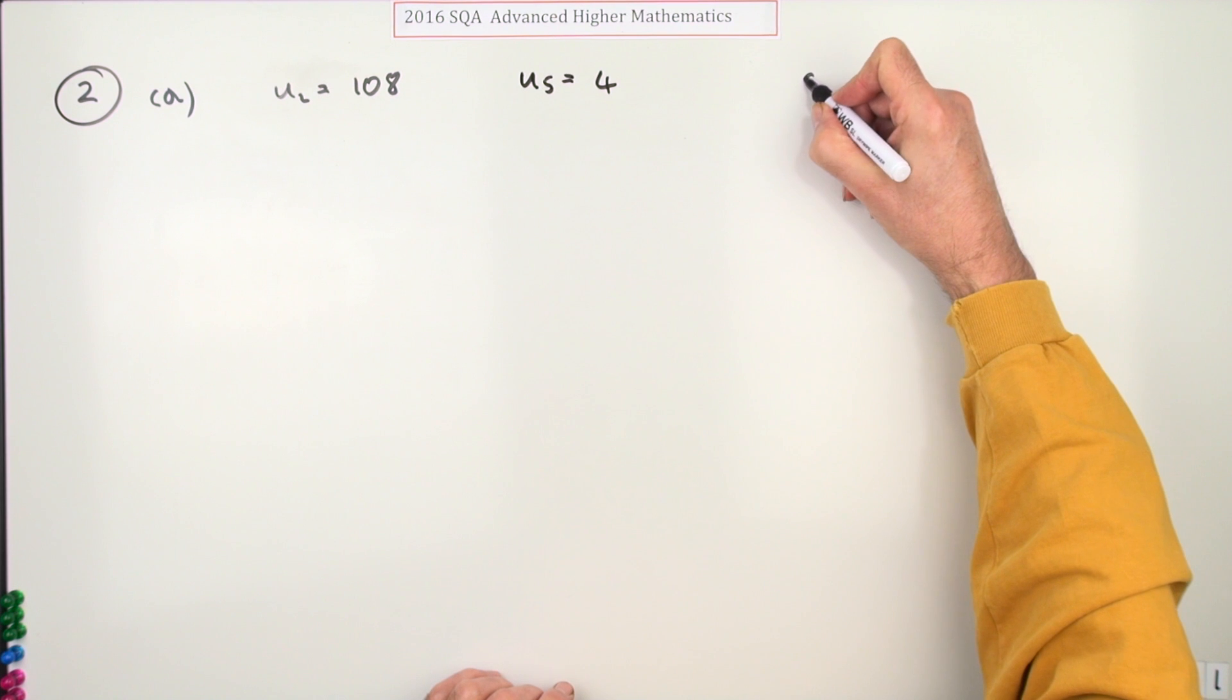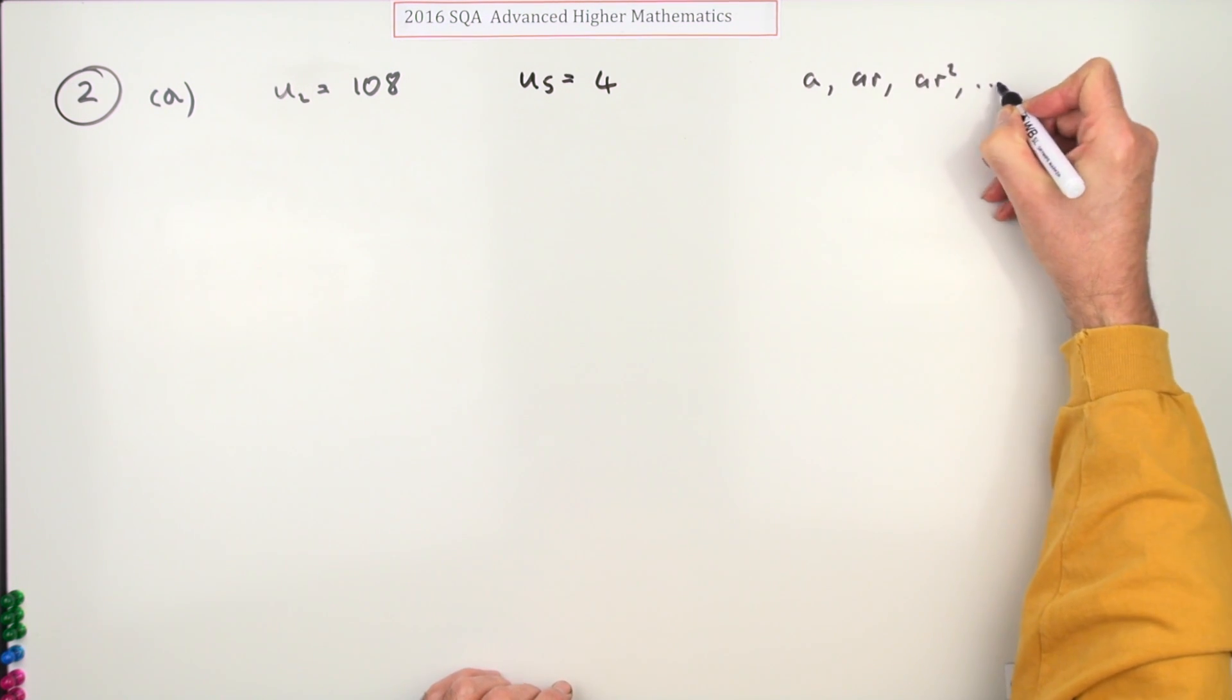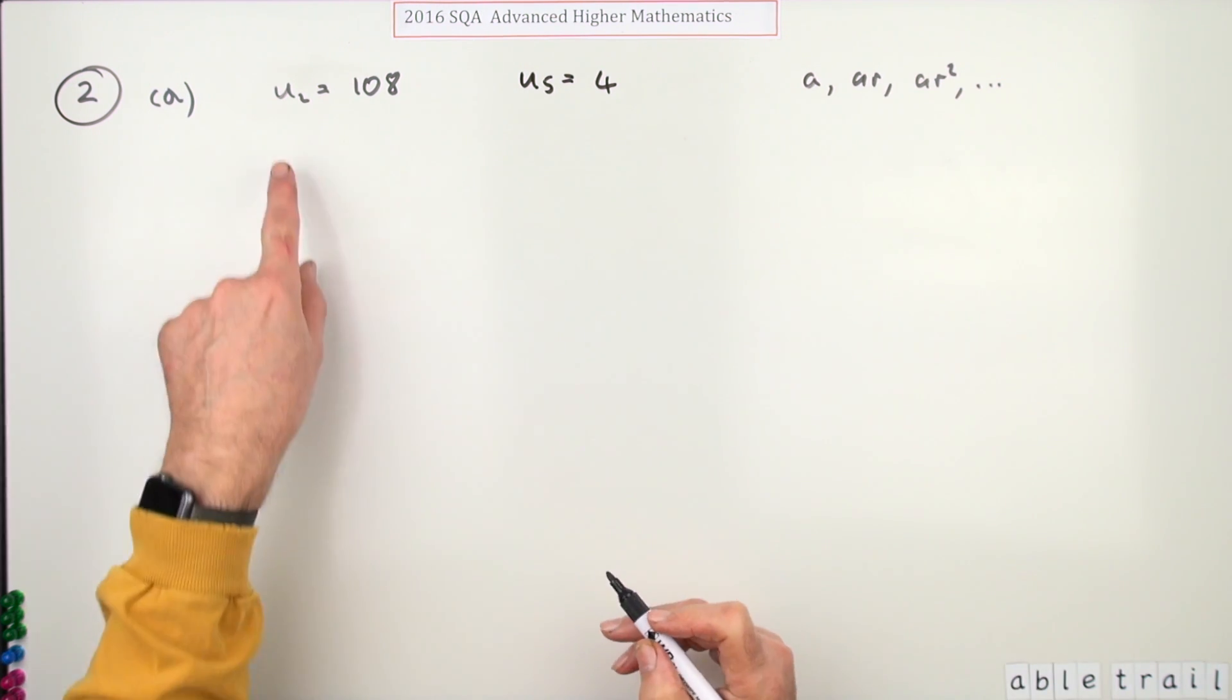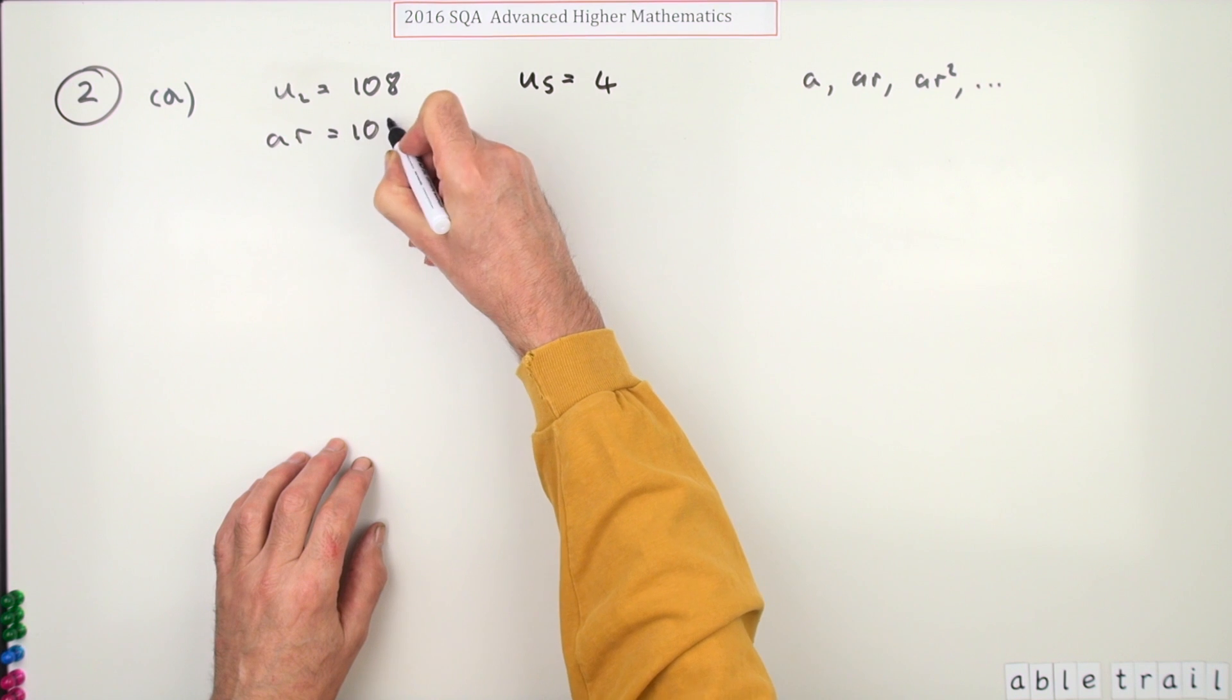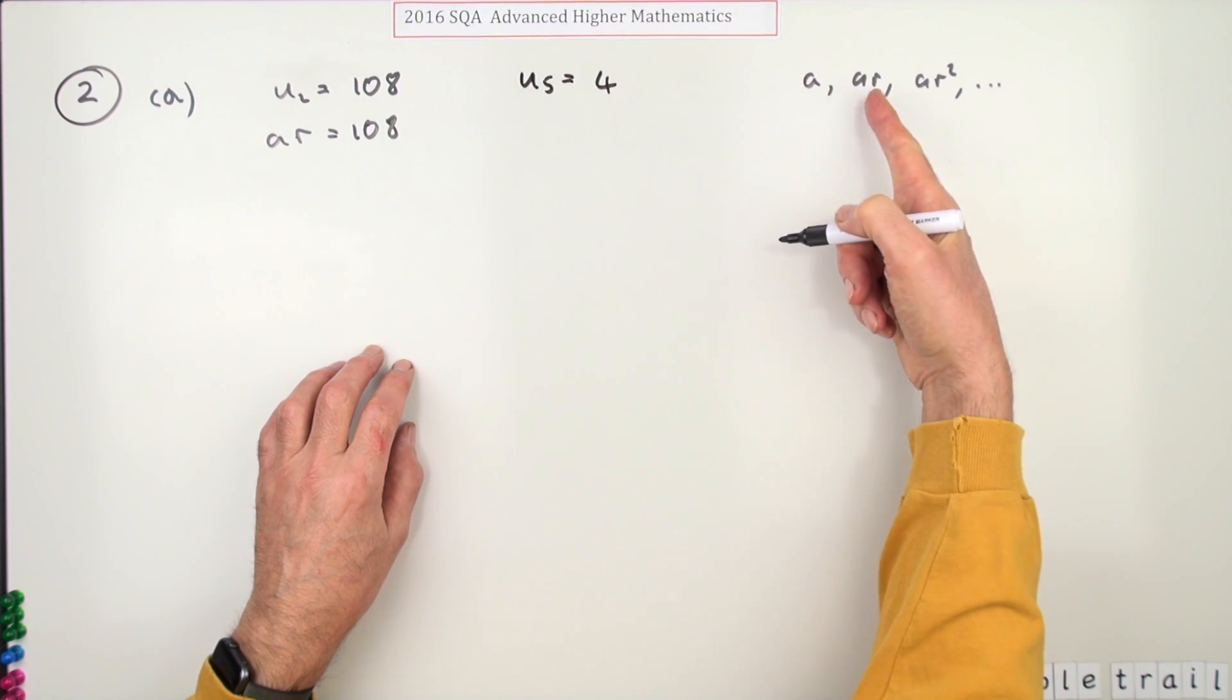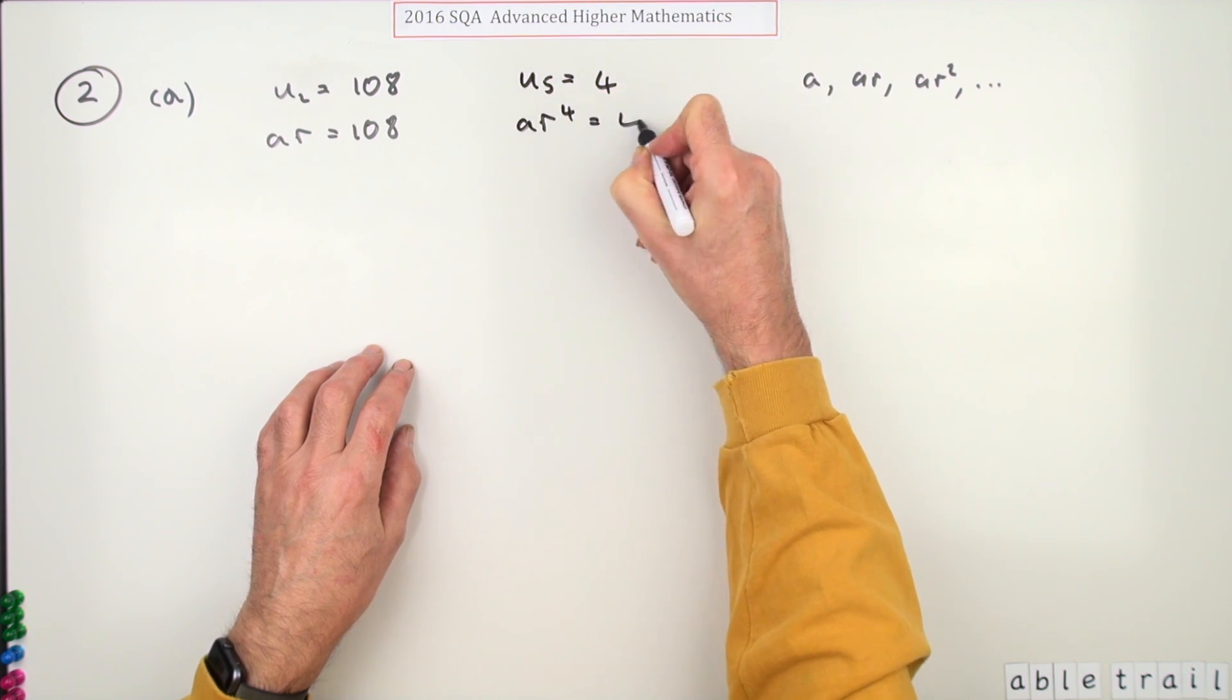So what's the common ratio for three marks? Well the geometric series starts A, then AR, then AR squared and so on, where A is the first term and R is the common ratio. So for this one the second term that would mean AR equals 108 and for this one by the time you get to the fifth term you'll have multiplied by R four times, so AR to the four is four.